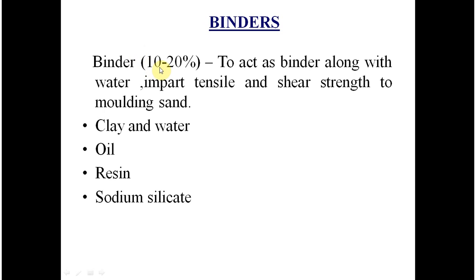Binders should be added to base sand at about 10 to 20 percent. They act to impart tensile and shear strength to the molding sand. Binders are added to bond the sand particles together — essentially the glue that holds the mold together. Types of binders include clay and water, oil, resin, and sodium silicate.